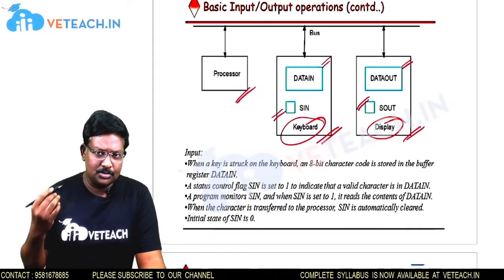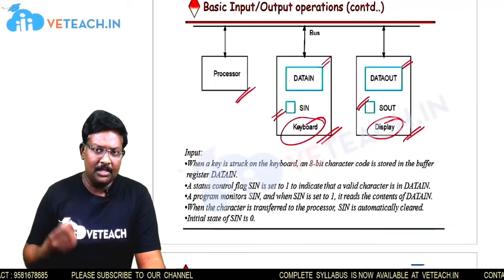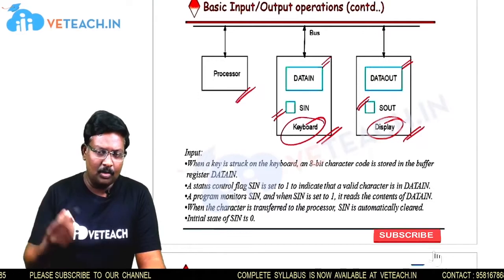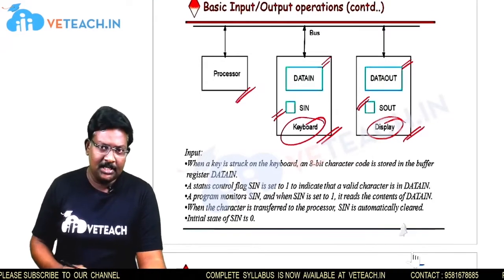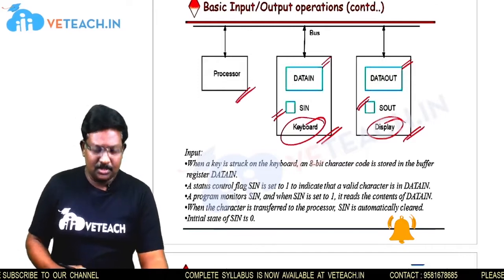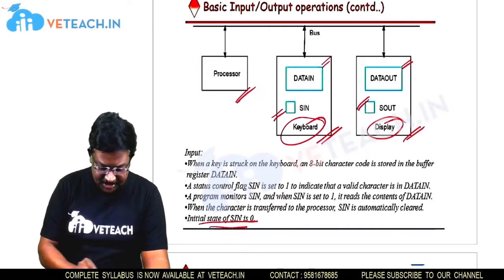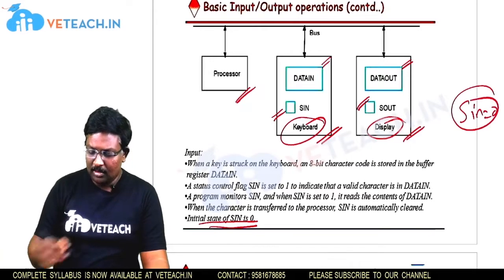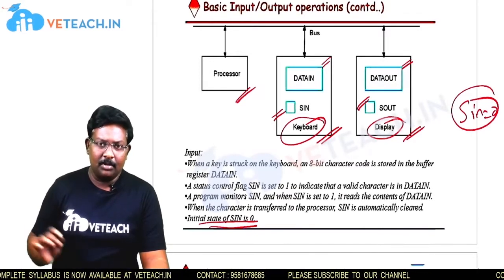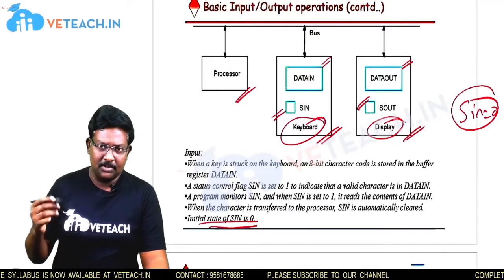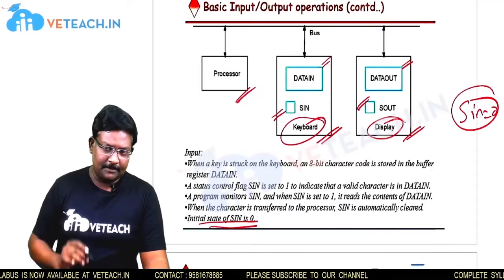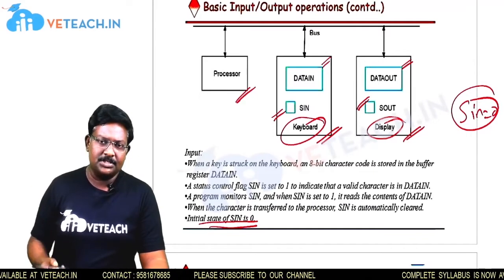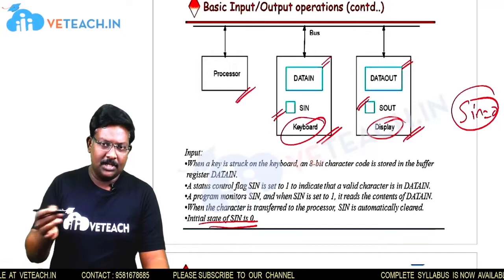Now, if the processor wants to receive data from the input device, we will see the sequence followed. Initially, we check the flag bit. Consider the initial state of SIN as 0. When SIN is 0, we are not performing any data transfer between the keyboard and processor. Only when SIN is equal to 1 do we perform the operation from the input device to the processor.